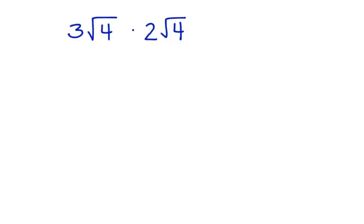To multiply these two radicals, we're going to work with the number parts separate from the radicals. Let's start by multiplying the numbers. 3 times 2 is equal to 6.